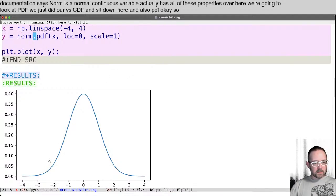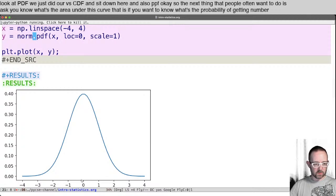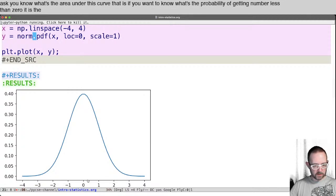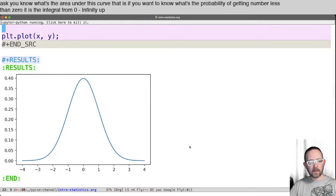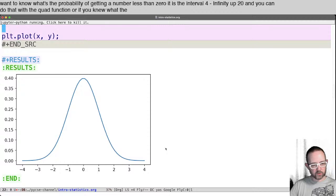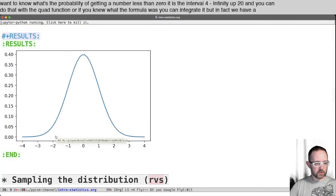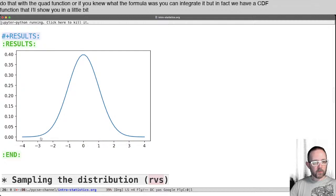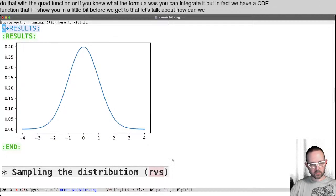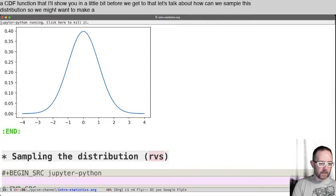Okay, so the next thing that people often want to do is ask what's the area under this curve. That is, if you want to know what's the probability of getting a number less than zero, it is the integral from minus infinity up to zero. And you can do that with the quad function, or if you knew what the formula was, you could integrate it. But in fact, we have a CDF function that I'll show you in a little bit. Before we get to that, let's talk about how can we sample this distribution.